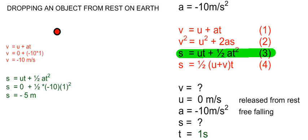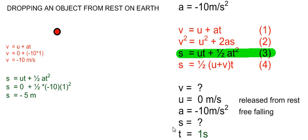For a body falling vertically, the initial velocity and the acceleration are always fixed, but the three variables — velocity, displacement, and time — vary with each other. If we know any one of these three, we can use the kinematics equations to find the other two. If we know the velocity, we can find the displacement and the time; or if we know the displacement, we can find the velocity and the time it took to reach that displacement.